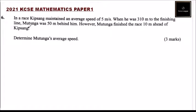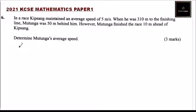Question number six. In a race, Kipsang maintained an average speed of 5 meters per second when he was 310 meters to the finishing line. Motunga was 50 meters behind him. However, Motunga finished the race 10 meters ahead of Kipsang. Determine Motunga's average speed. We can use a diagram to demonstrate that.